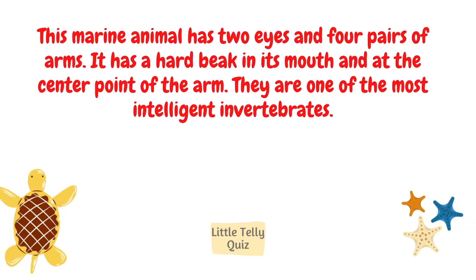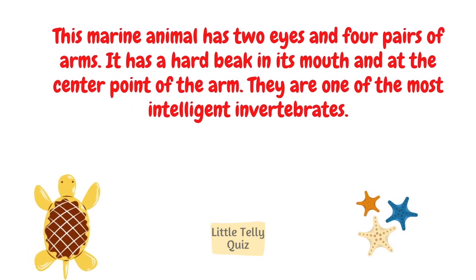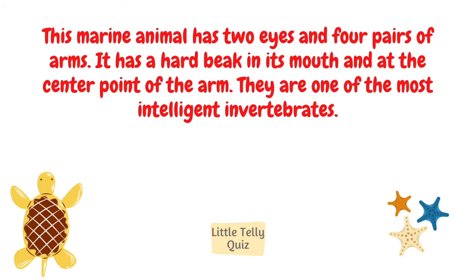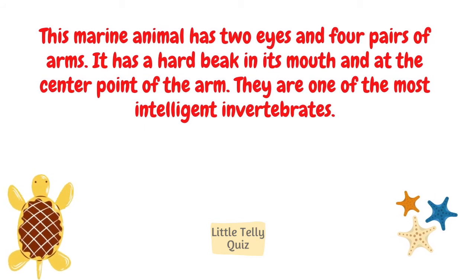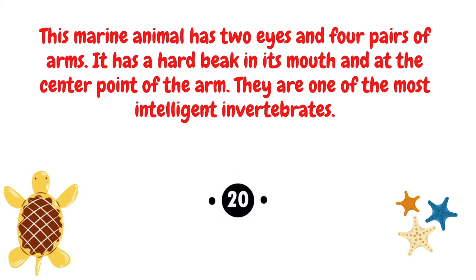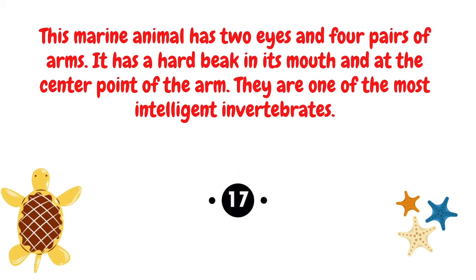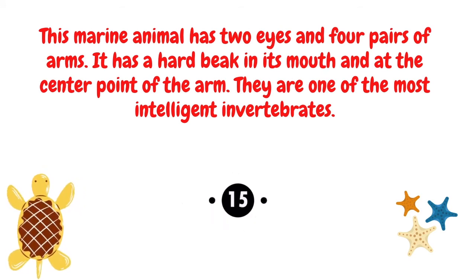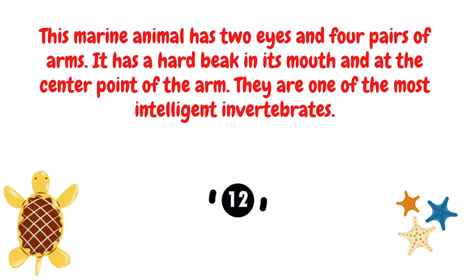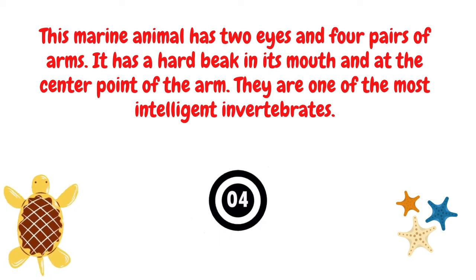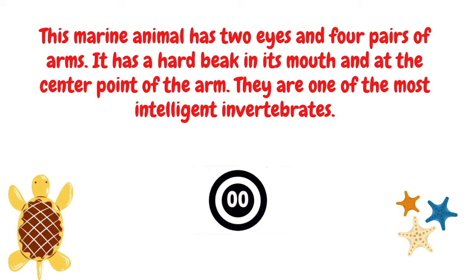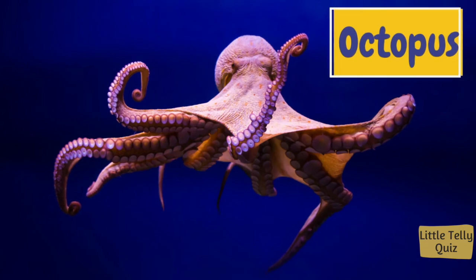This marine animal has two eyes and four pairs of arms. It has a hard beak in its mouth at the center point of the arms. They are one of the most intelligent invertebrates. The answer is octopus.